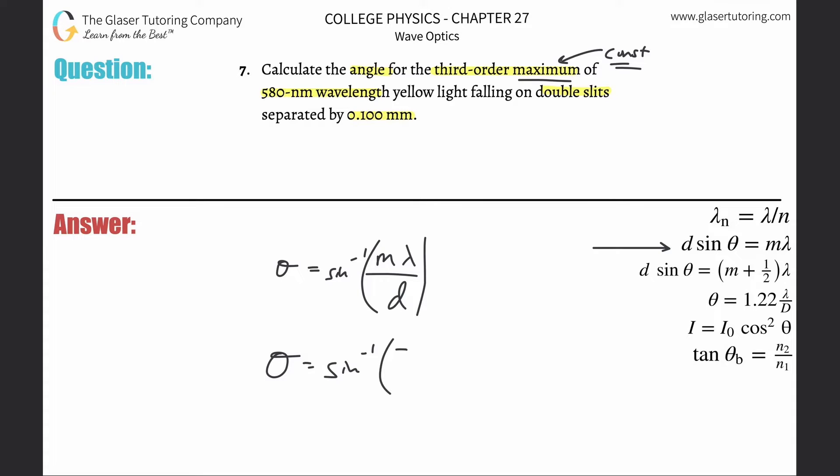Now plug in the values. It's a third-order max, therefore m is three. The wavelength needs to be in meters, so it's 580 times 10 to the minus ninth, divided by the distance, which is 0.1 times 10 to the minus three meters.